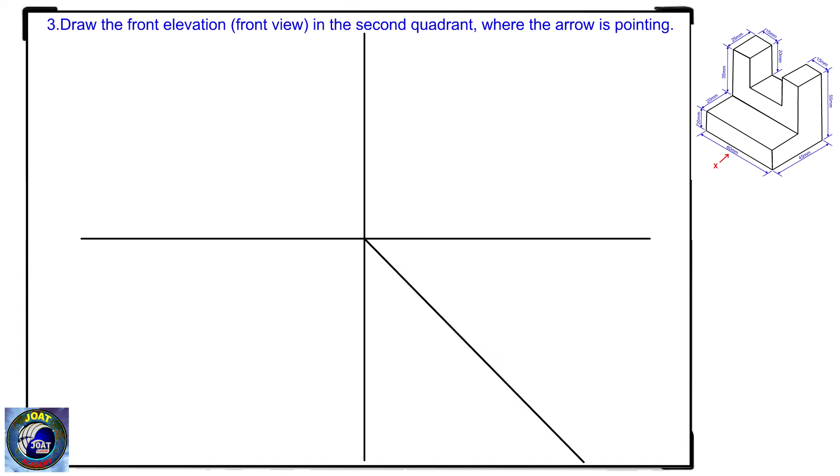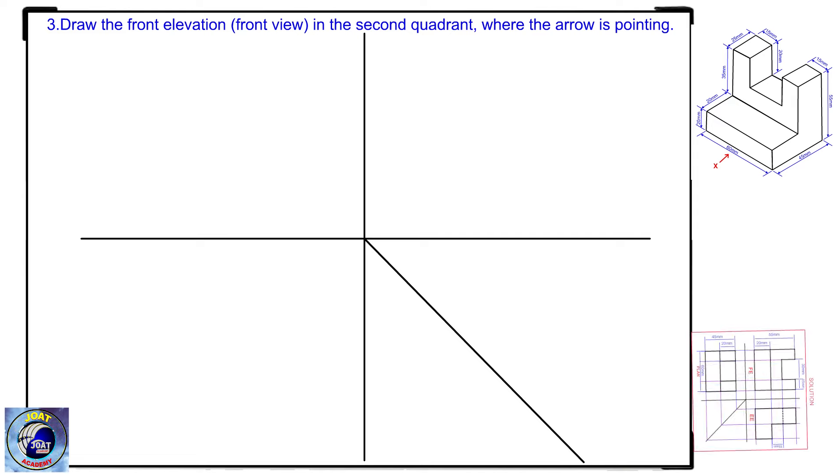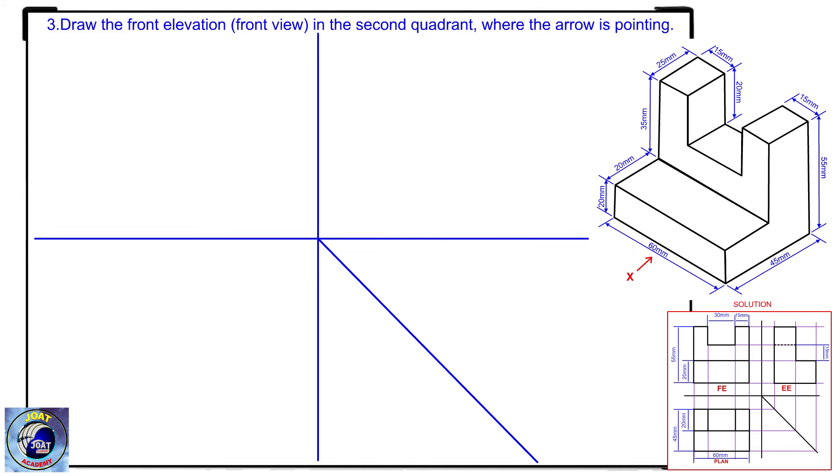Step 3: Draw the front elevation — the front view — in the second quadrant, where the arrow is pointing.